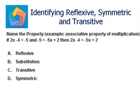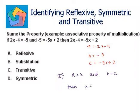Now, if I take a as 2x minus 4, b as negative 5, and c as negative 5x plus 2, I can say a equals b and b equals c. If a equals b and b equals c, then a equals c.